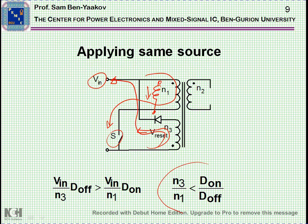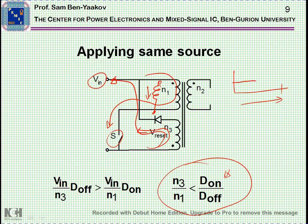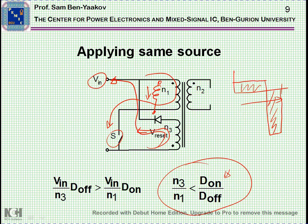We find that the required turns ratio of N3 to N1 depends on D_on and D_off. If D_on is a long time, we need a high voltage to compensate, so there's a trade-off relationship between D_on, D_off, and the turns ratio.